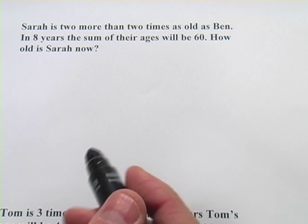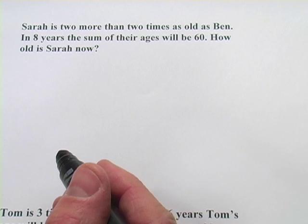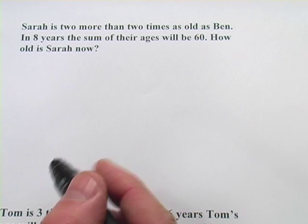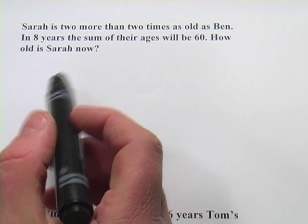In these problems, we're dealing with figuring out people's ages, and they require a system of equations. The hardest part is setting up the two equations. Solving them afterwards is usually not too big a deal. Let's take a look at the first one.